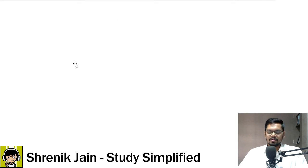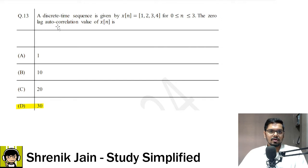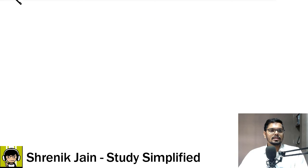Why? Let us see. First of all, you have to understand what is zero lag autocorrelation value of X of N. This means value of X of N at N is equal to 0 after doing the autocorrelation. Understood? Okay.